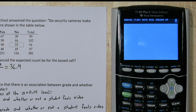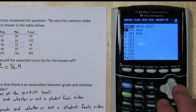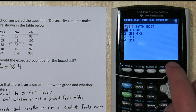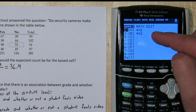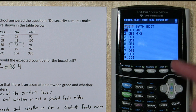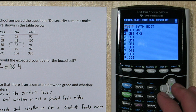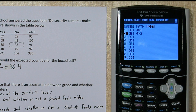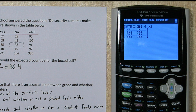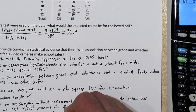Press 2nd quit, then go back to the matrix menu. Notice in names we now have a four by two next to matrix A and matrix B, meaning there's data in both. If you go to edit and scroll down to B, these are all of our expected cell counts. A quick scan shows they're all greater than five, so we have a large enough sample and the large sample size condition is met.